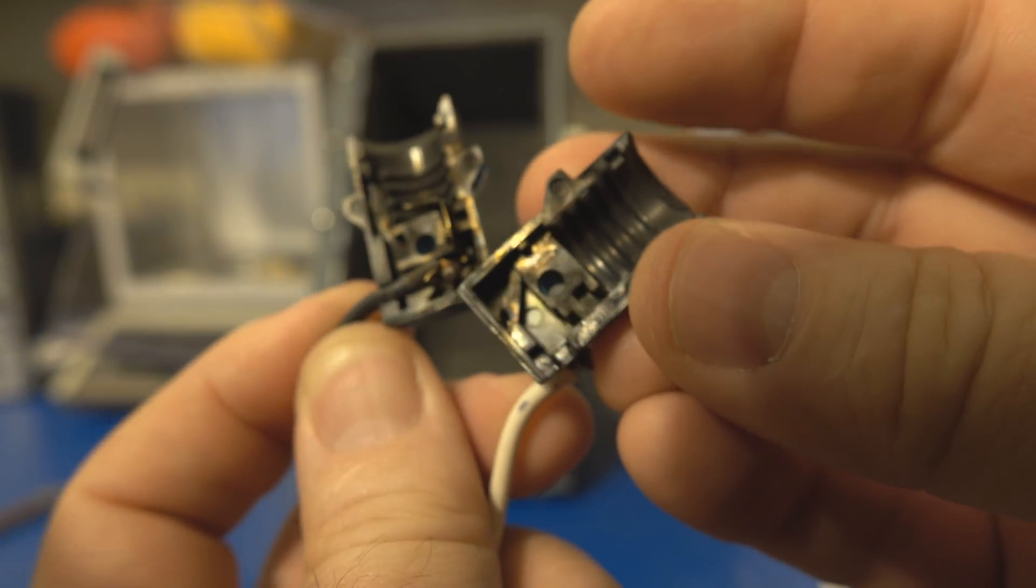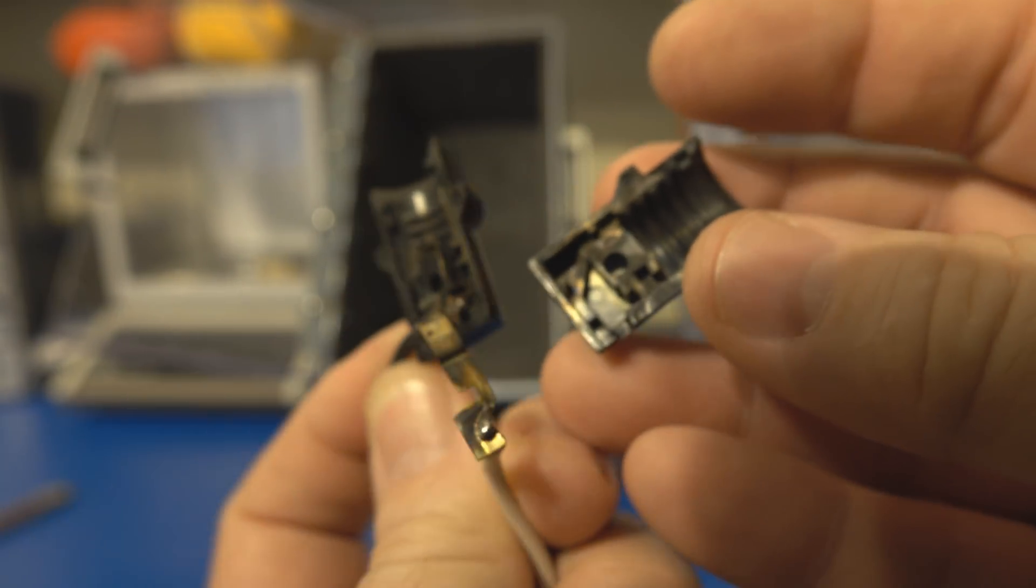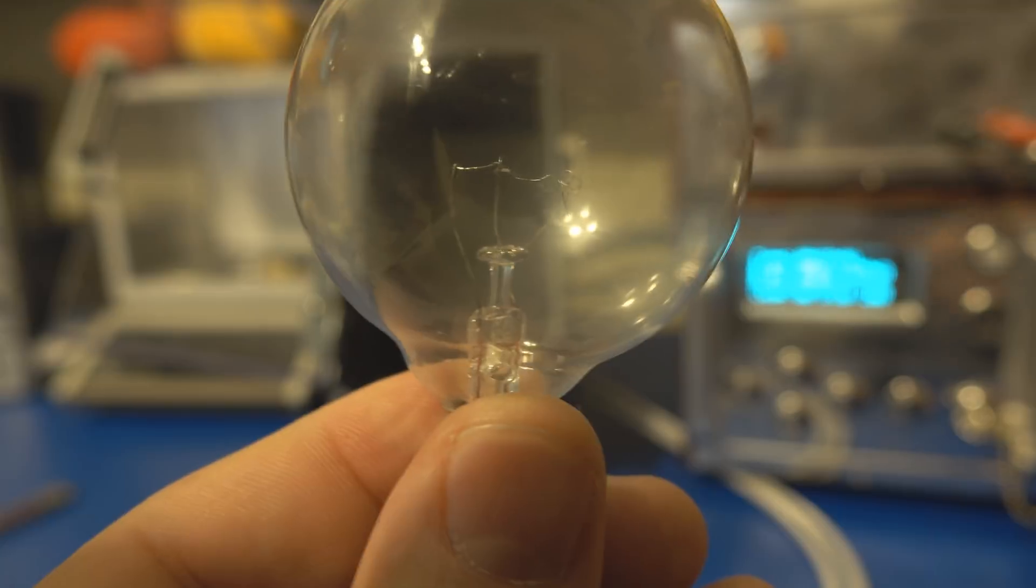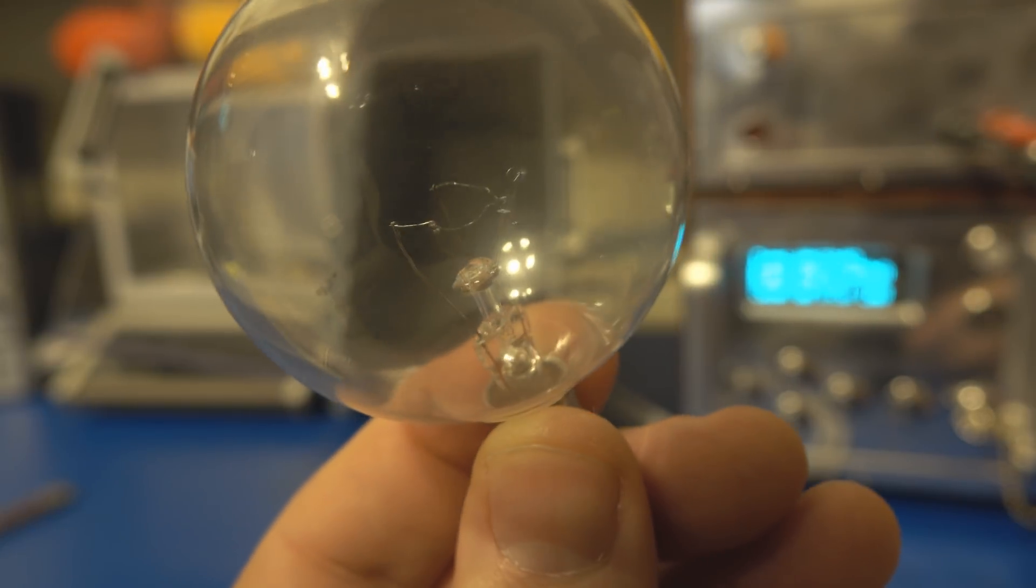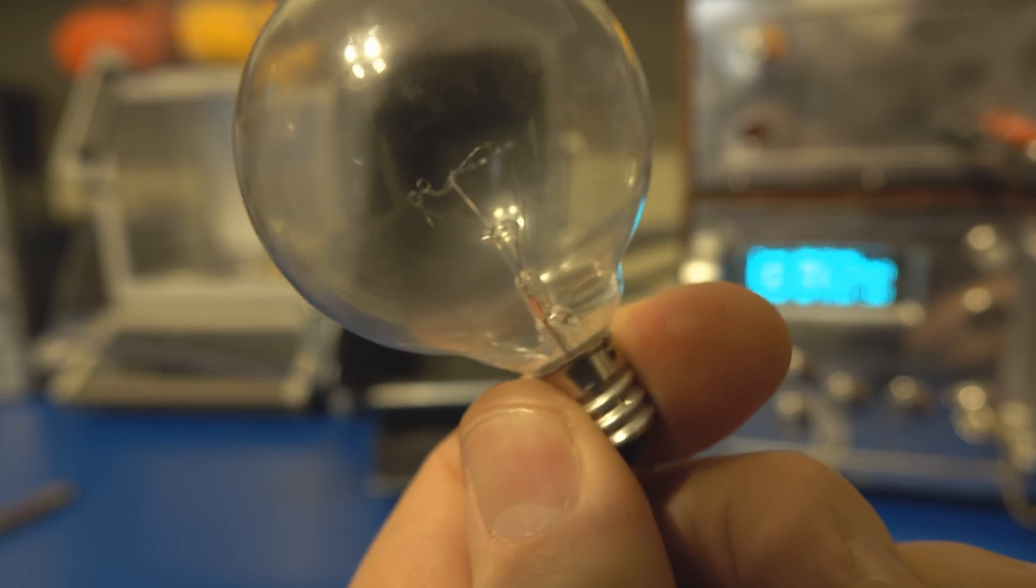You can see what's happened. It definitely arced inside of the socket. And here you can see the filament on the light bulb. It's still pretty much all there.